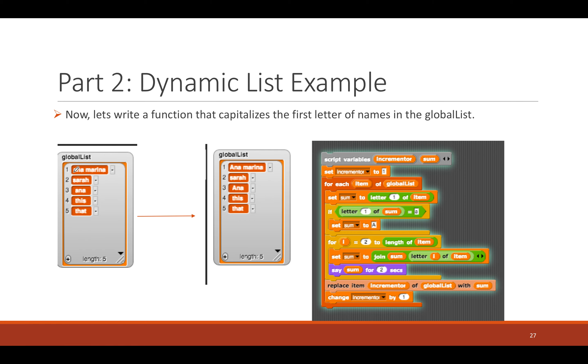Now, if you notice, I have the word anna marina. I want to extract the A, make it capitalize, and then add the N next to it, then add the A, and then add the space, and then add the M.